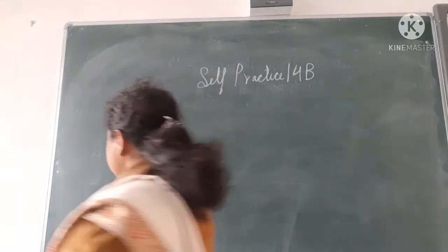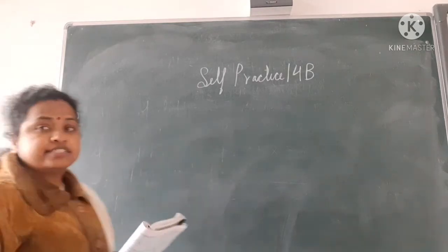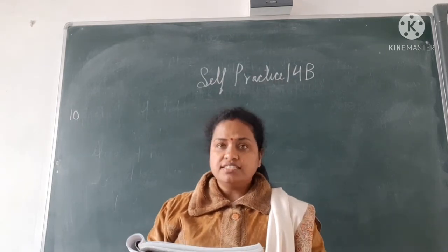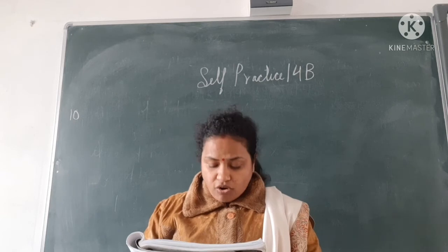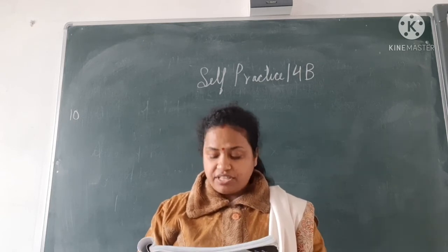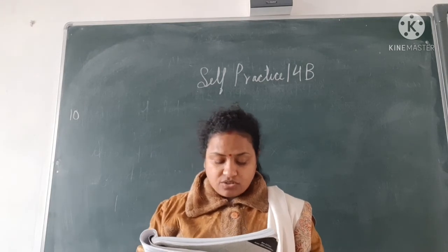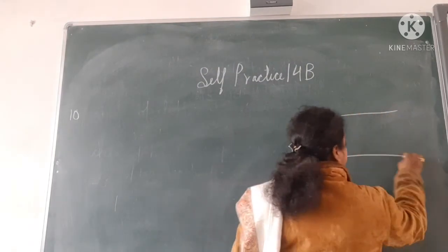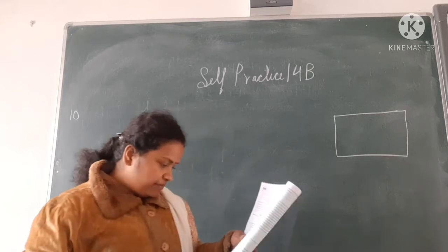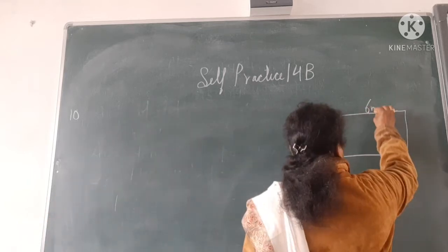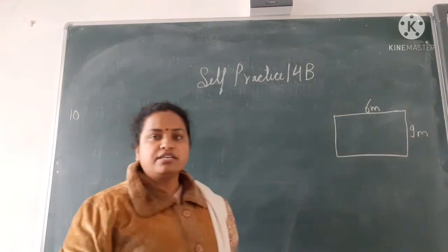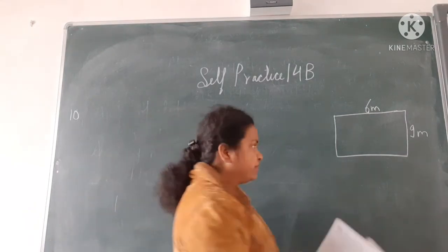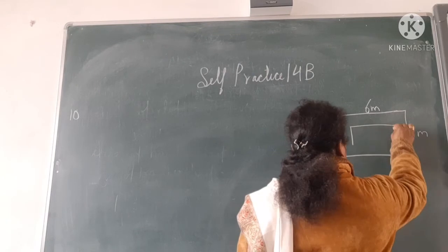See question number 10. A living room floor measures 6 metre by 9 metre. A 4 metre by 7 metre rug is placed on the floor. How many square metres of the floor are not covered by the rug? This is your floor — its measurement is 6 metre by 9 metre.